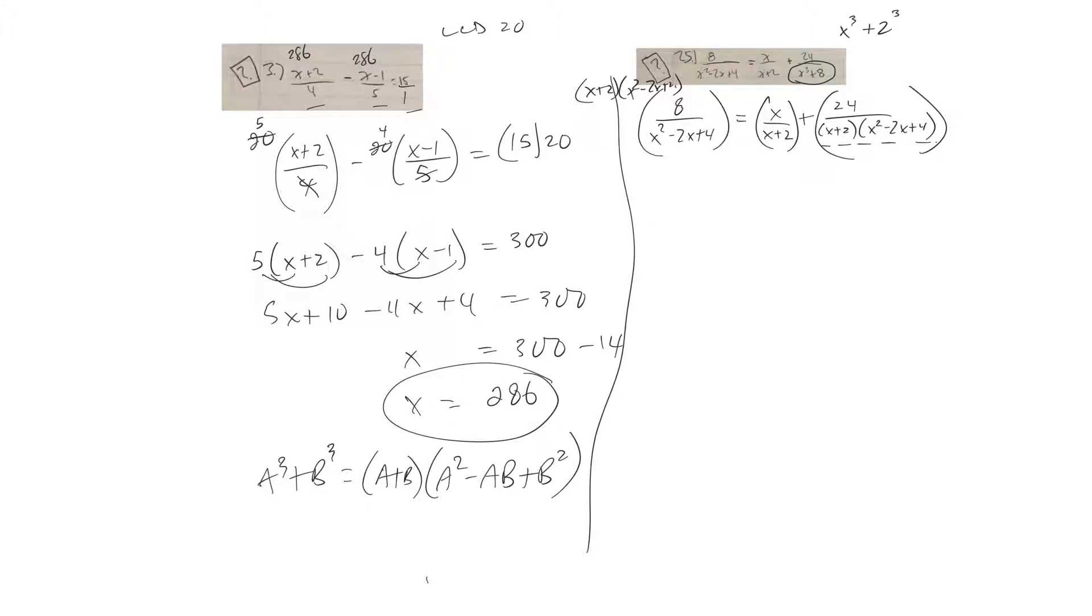So in the first one, this would cancel and I'd be left with 8 times x plus 2. On this one here, the x plus 2's would cancel, so I'd be left on the top with x times x squared minus 2x plus 4.